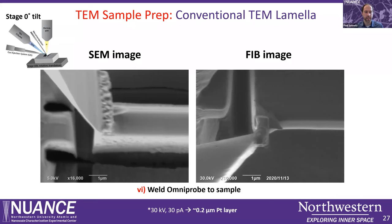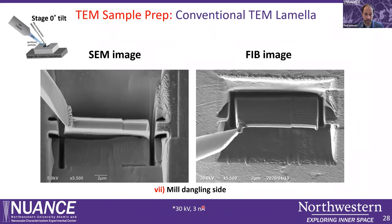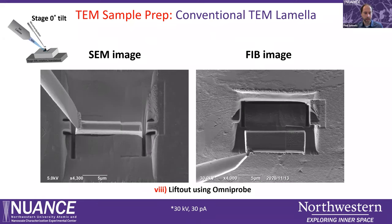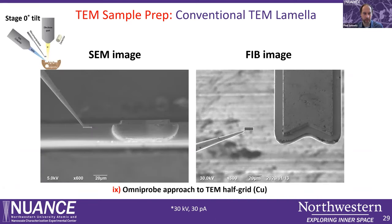The next process is to weld the omniprobe — the tungsten needle — to our sample using a bit of platinum, and cut the other side loose at increased current just as we did the J-cut. Then we drive the omniprobe in X, Y, and Z: we use the FIB image to drive up in Z, and the SEM image to judge position in X and Y. We image at lower currents so we do not create more damage to the sample, and then lift it out and approach one of the posts on our TEM grid.